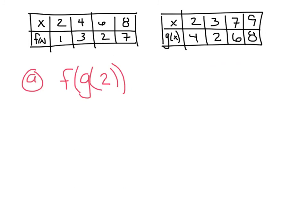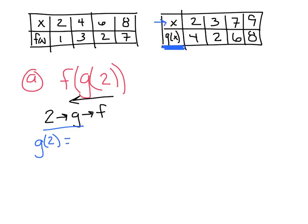Copy down these tables — one is the F of X table, the other is the G of X table. Now we'll evaluate composition from a table. For F of G of 2, working backwards: 2 goes into G. Looking at the G table, when X equals 2, the output is 4. Now F of 4 — looking at the F table, when X equals 4, the output is 3. Final answer is 3.